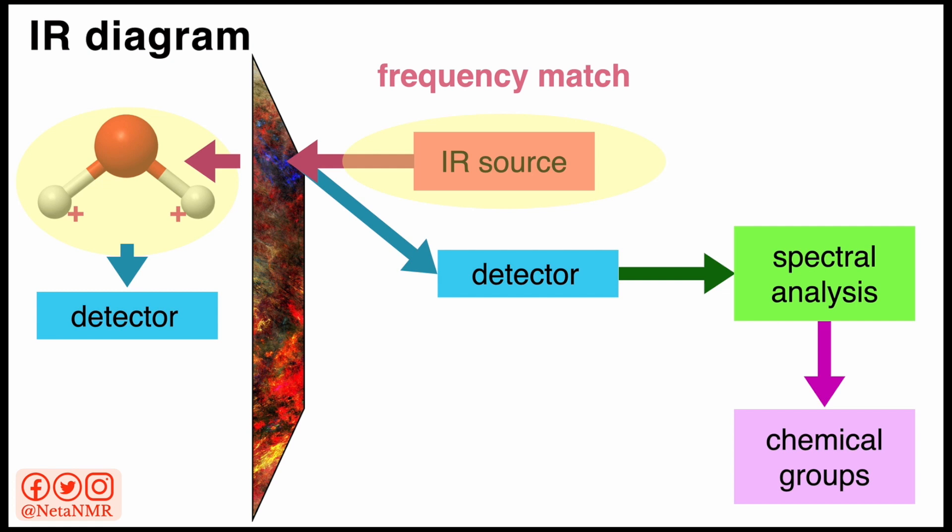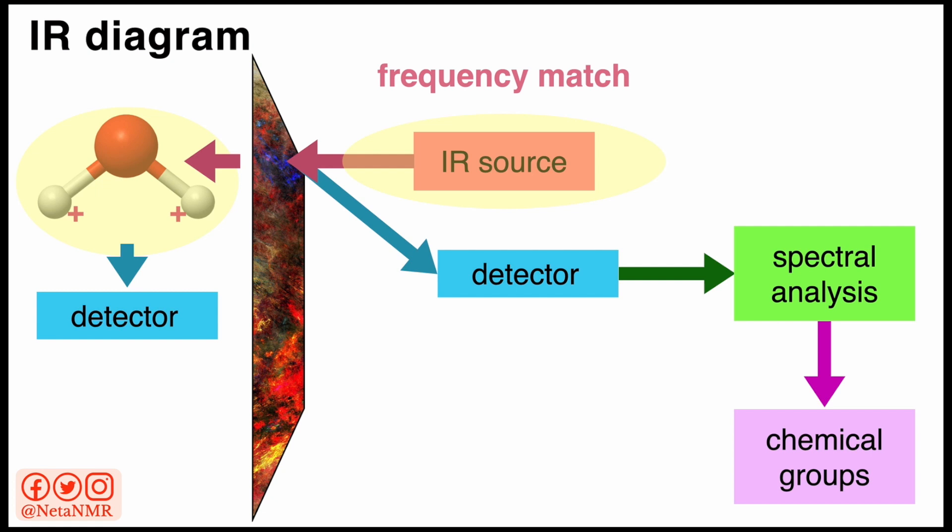And because the molecule absorbs the radiation, then there is none or little radiation that is then transmitted onto the detector. If, on the other hand, there is no match between the frequency of the radiation and the vibrational frequencies in the sample, then the molecule does not absorb radiation and the radiation ends up being transmitted through to the detector.